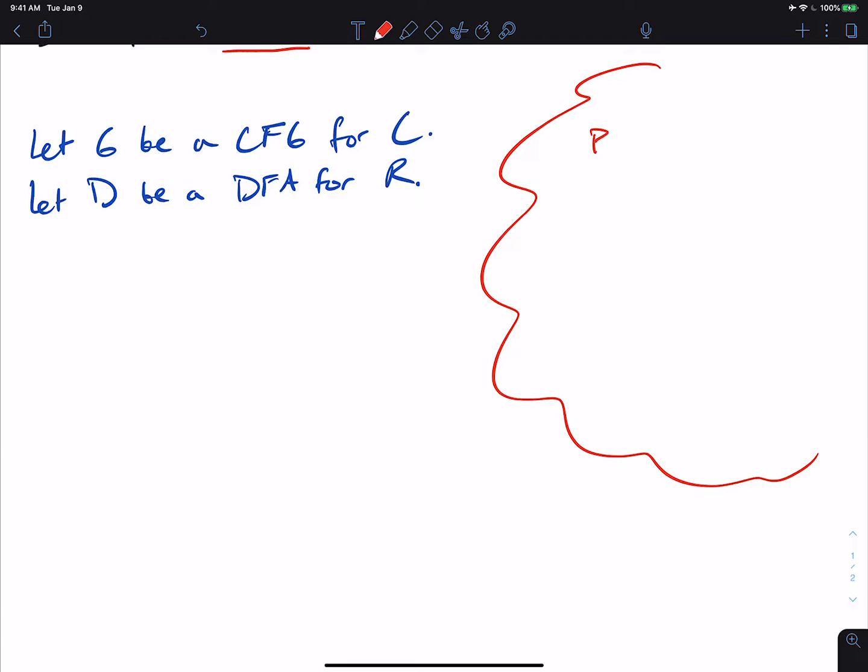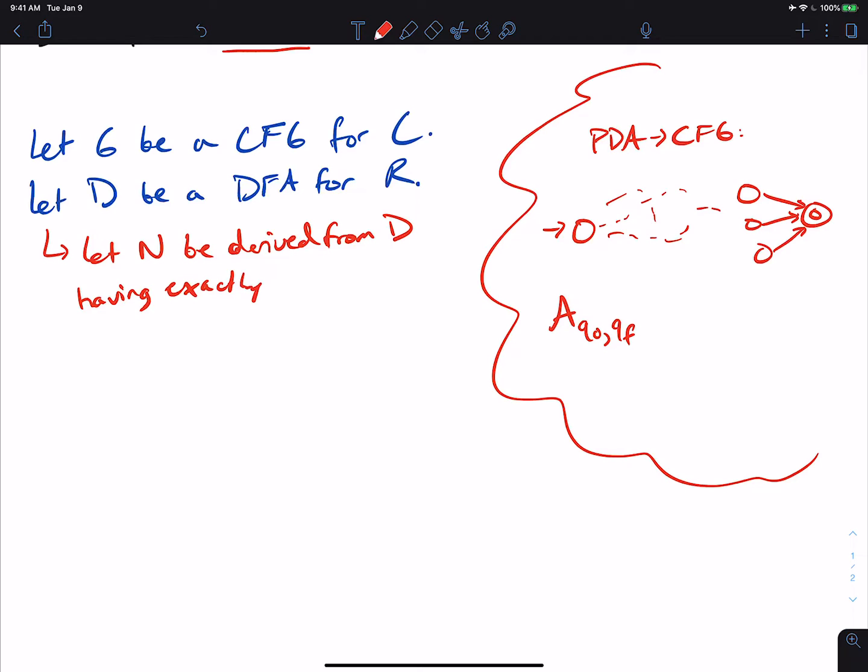So if you recall the PDA to CFG conversion, one of the steps that we had was when in the PDA, it can have a bunch of states. But at the end, we had all of the originally final states go to a single final state. And the reason for that was that whenever we wanted to make the start variable of the CFG, we needed a state of the form A Q0 comma QF, all of the states that take us from the start state to the single final state.